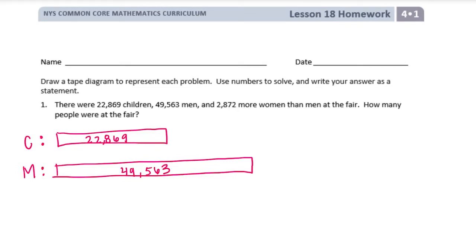And 2,872 more women than men. So it doesn't tell us exactly how many women, but it tells us that there were more women than men, so I'll make it a little bit bigger. And it tells us exactly 2,872 more women than men, so more plus 49,563 men. We want to know all together how many people were at the fair, so we need to total all of this up.